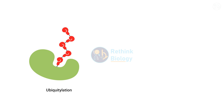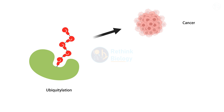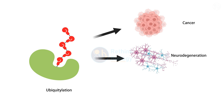Ubiquitylation is essential for maintaining cellular homeostasis, and defects in this process can lead to various diseases such as cancer, neurodegeneration, and inflammation.